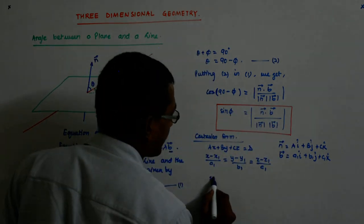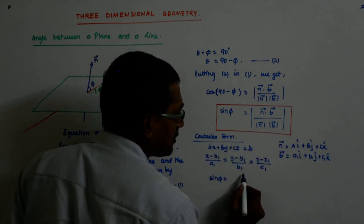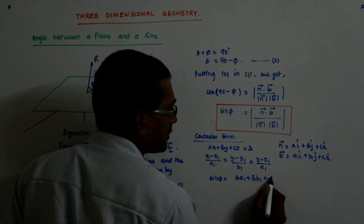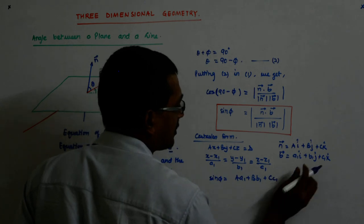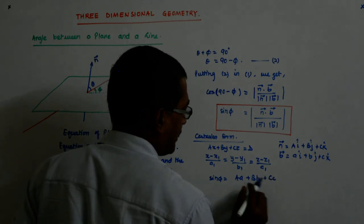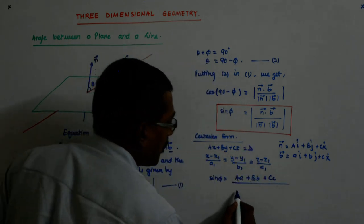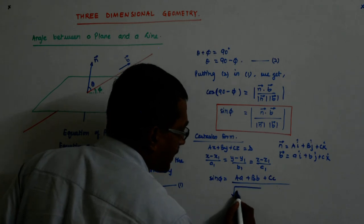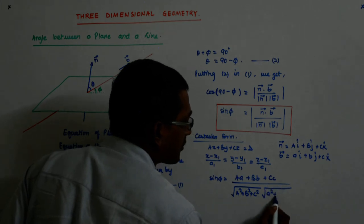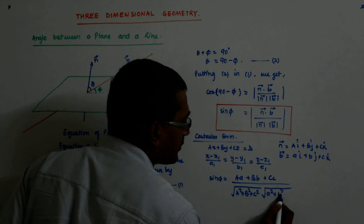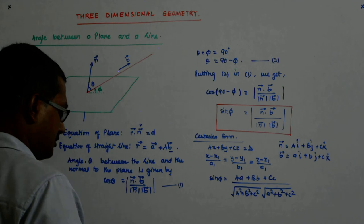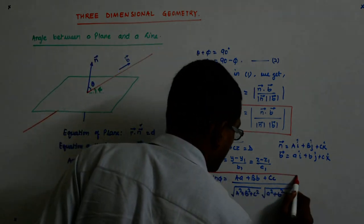And just apply it here. So, what is n dot b? I straight away write sin phi. N dot b is what? A a1 plus b b1 plus c c1. So, divided by mod n which is square root of a square plus b square plus c square. That's all. That's the Cartesian form.